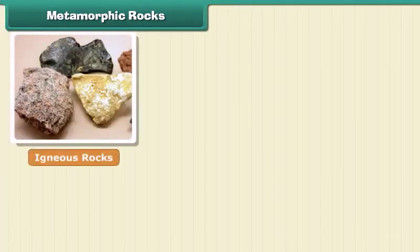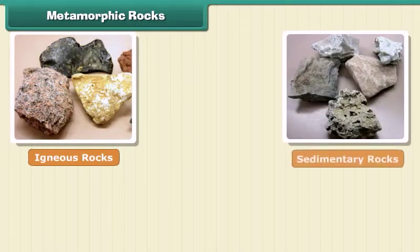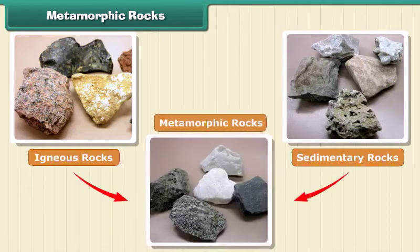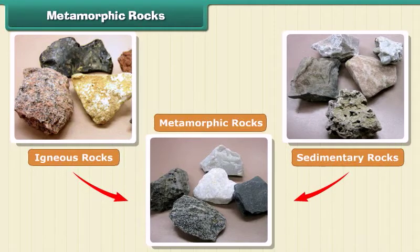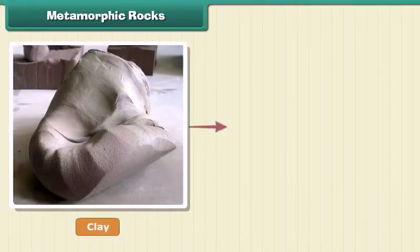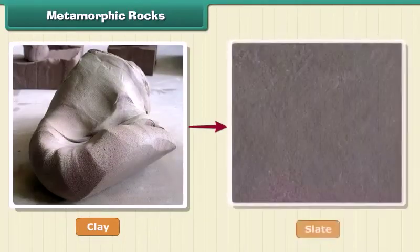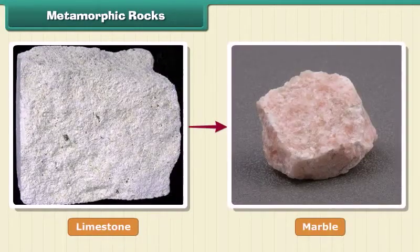The third type of rock is made out of the first two types — these are metamorphic, or changed, rocks. Igneous and sedimentary rocks can change into metamorphic rocks under great heat and pressure. For example, clay changes into slate and limestone into marble.